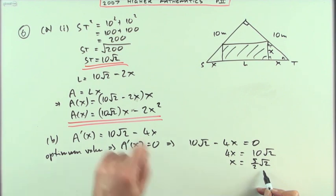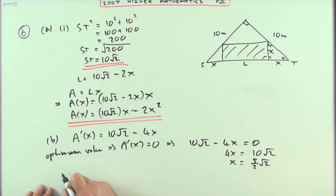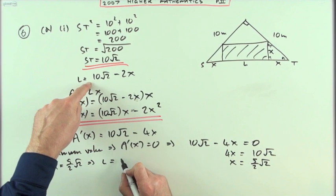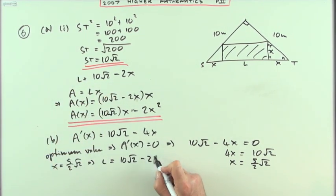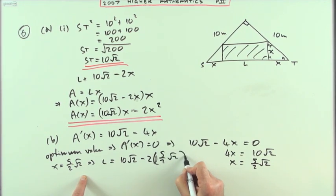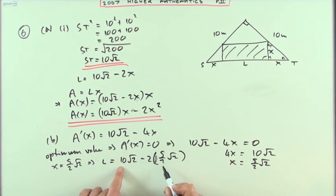Then, now that I know what x is, I can find L back from this original expression here. If x equals 5 over 2 root 2, that means that L is going to be 10 root 2 minus twice—I'll just put 2 times 5 over 2 root 2. Now the 2s will cancel out, making it just 10 take away 5 root 2.